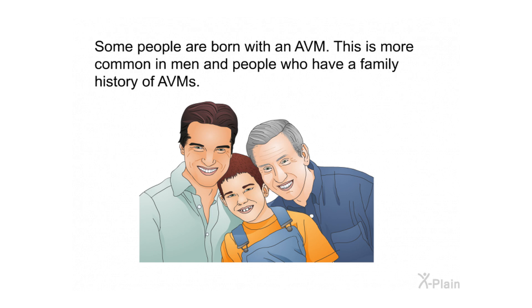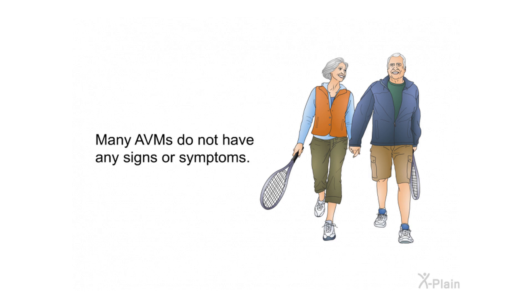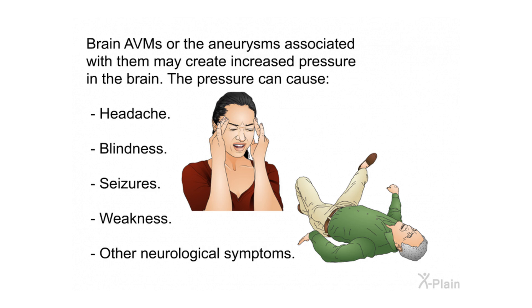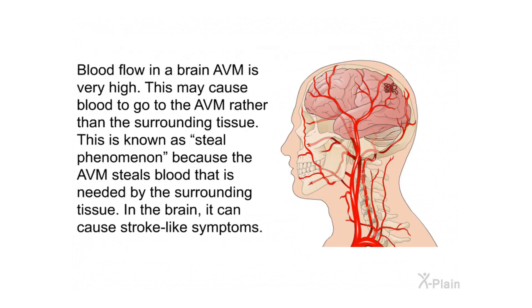Many AVMs do not have any signs or symptoms. Brain AVMs, or the aneurysms associated with them, may create increased pressure in the brain. The pressure can cause headache, blindness, seizures, weakness, and other neurological symptoms. Blood flow in a brain AVM is very high, which may cause blood to go to the AVM rather than the surrounding tissue. This is known as steal phenomenon, because the AVM steals blood needed by surrounding tissue, which can cause stroke-like symptoms in the brain.